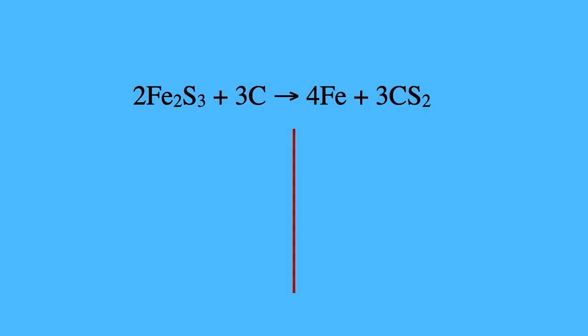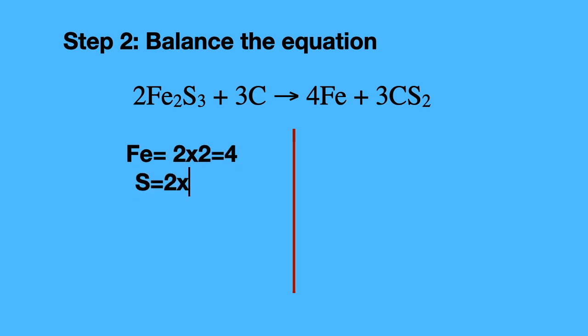What is the second step? The second step is balance the equation. The equation we are given is 2Fe2S3 plus 3C gives you 4Fe plus 3CS2. We need to check if the equation is balanced before we start or we can end up with the wrong answer.